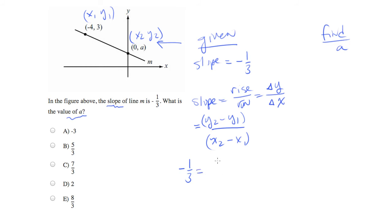Should equal Y2, which is A, minus Y1, which is 3, over X2, which is 0, minus X1, which is negative 4. Very careful about the double negative there. So this is going to be equal to A minus 3, over 4.